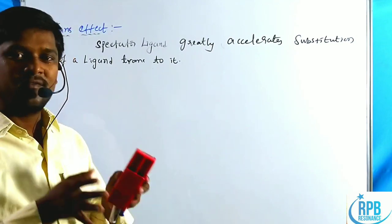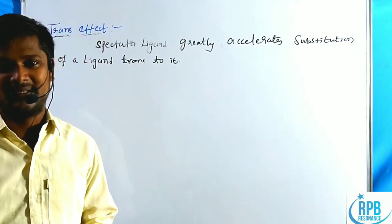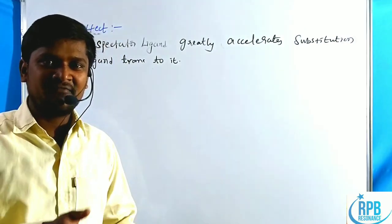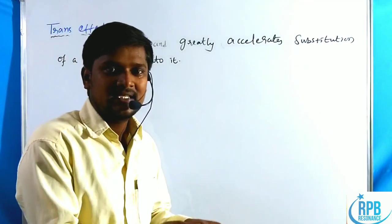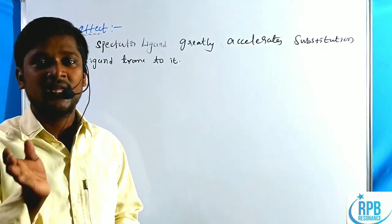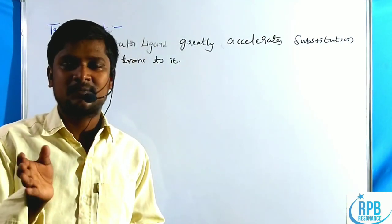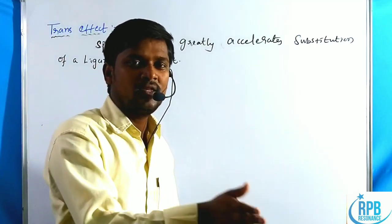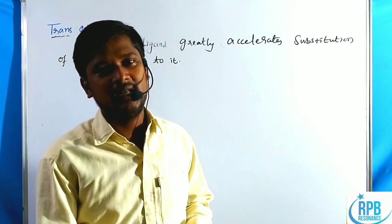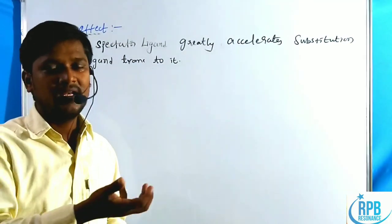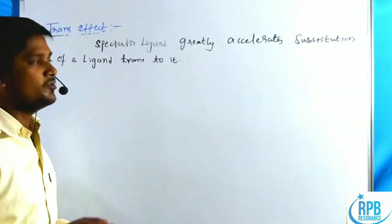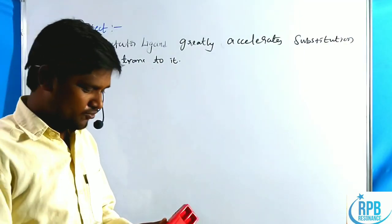Generally, the trans effect is observed in square planar complexes, not octahedral complexes. The major difference between substitution reactions of octahedral and square planar complexes is that octahedral complexes undergo the dissociative mechanism, but square planar complexes undergo substitution reactions through the associative mechanism.